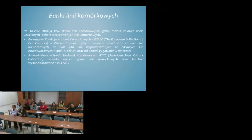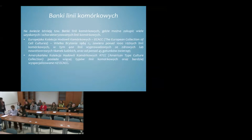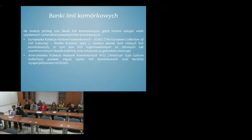Na świecie znajdują się dwa najbardziej popularne banki linii komórkowych. To jest Europejska Kolekcja Hodowli Komórkowych, założona w Wielkiej Brytanii w 1984 roku, zawierająca ponad tysiąc różnych linii komórkowych, oraz Amerykańska Kolekcja Hodowli Komórkowych, dużo większa, posiadająca znacznie więcej różnych typów linii. To są banki, gdzie komercyjnie można zakupić wybrane linie komórkowe.